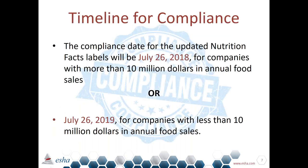A reminder of the compliance date and timeline. For companies that make greater than $10 million in annual food sales, they had two years to make the transition. As of July 26, 2018, anything produced on or after that date is required to have the new label. For companies that make less than $10 million in annual food sales, they had three years, so July 26, 2019 is their compliance date.